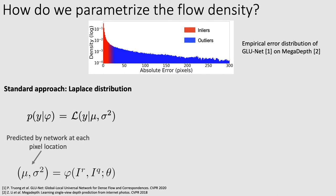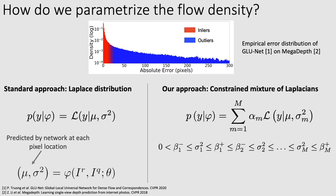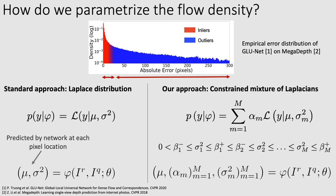Current probabilistic methods mostly rely on a Laplacian model. It has two parameters: the mean, which corresponds to the estimated flow vector, and the variance parameter. We instead use a constrained mixture model with m Laplace components. All components have the same mean but different variances. Moreover, each component is responsible for a different range of uncertainties, roughly corresponding to different regions of the error distribution. Compared to the single Laplace, our approach allows predicting for each match the probability of inlier versus outlier, each modeled by separate Laplace components.